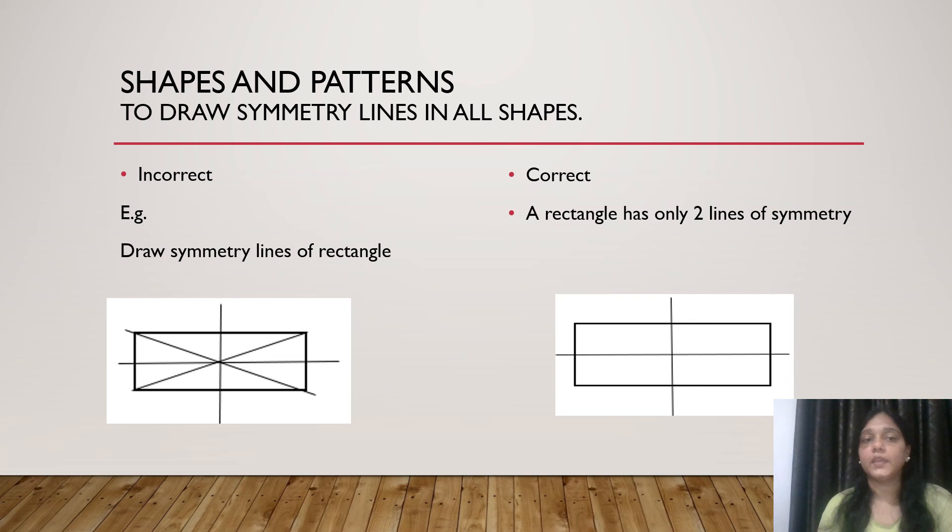Our next topic is shapes and patterns. In symmetry chapters children get confused to draw the symmetrical lines. Suppose a rectangle is given and we have to draw the symmetrical lines. They draw 4 lines of symmetry in place of 2 which is wrong. A rectangle has 2 lines of symmetry. Other than that they get confused in half turn, 1 by 4 turn and full turn to find out the rotational symmetry. To understand the concept of all types of symmetry they need to learn the rules of symmetry.